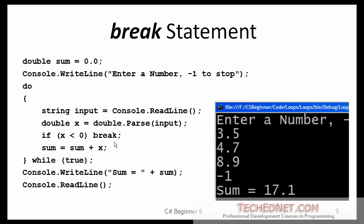If not, I keep on adding that number and continue the loop. The loop will always continue until it encounters the break statement. I entered four numbers: 3.5, 4.7, 8.9, and then minus one to tell the program to terminate. It gives me the sum of the first three numbers entered. The result should be 17.1. Try out this example again.